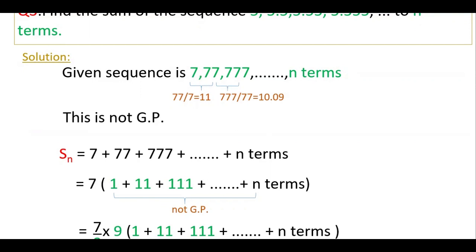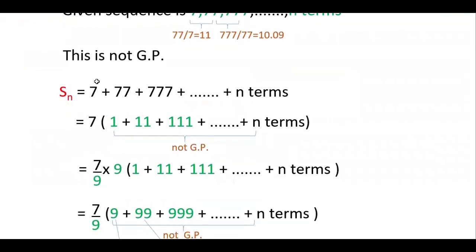For that you have to go through this process. First, find the sum: 7 plus 77 plus 777 plus n terms. Here 7 is common, so you can take out 7, giving 7 into (1 plus 11 plus 111 plus etc., n terms). Again check this — 11 by 1 is 11 and 111 by 11 gives a different ratio — so this is also not GP.